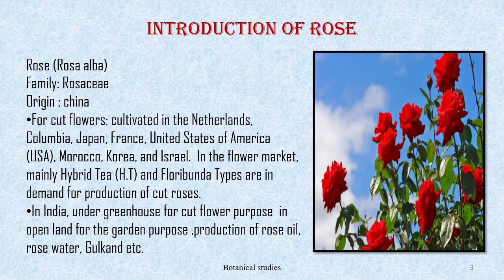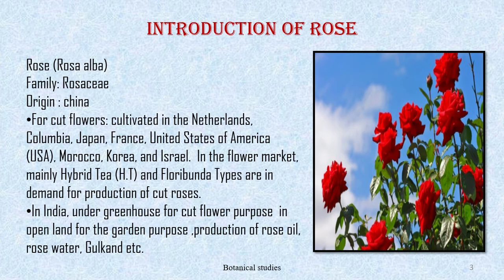Introduction of rose: the botanical name of the rose is Rosa alba, belonging to family Rosaceae, and it was originated in China. Rose is the most important cut flower and ornamental plant in a garden — it is the number one cut flower in the international market. Roses are extensively cultivated in the Netherlands, Colombia, Japan, France, United States of America, Morocco, Korea, and Israel. In the flower market, mainly hybrid tea and floribunda types are in demand. In India, it is grown under greenhouses for cut flower purpose, and large numbers of varieties are grown for the garden purpose, also for production of rose oil, rose water, and gulkand.